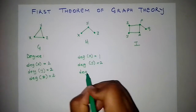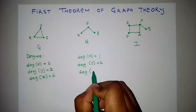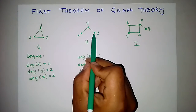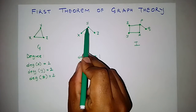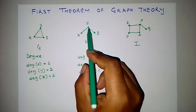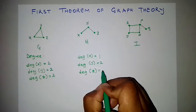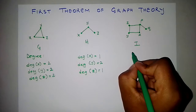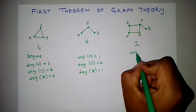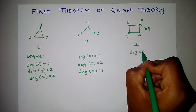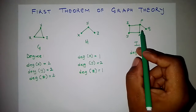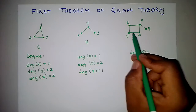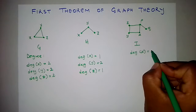Lastly in Graph H, let's look at the degree of vertex Z. Z is only adjacent to vertex Y, so the degree of Z equals 1. Moving to Graph I, the degree of vertex X — X is adjacent to vertex P and Y — so it's 2.